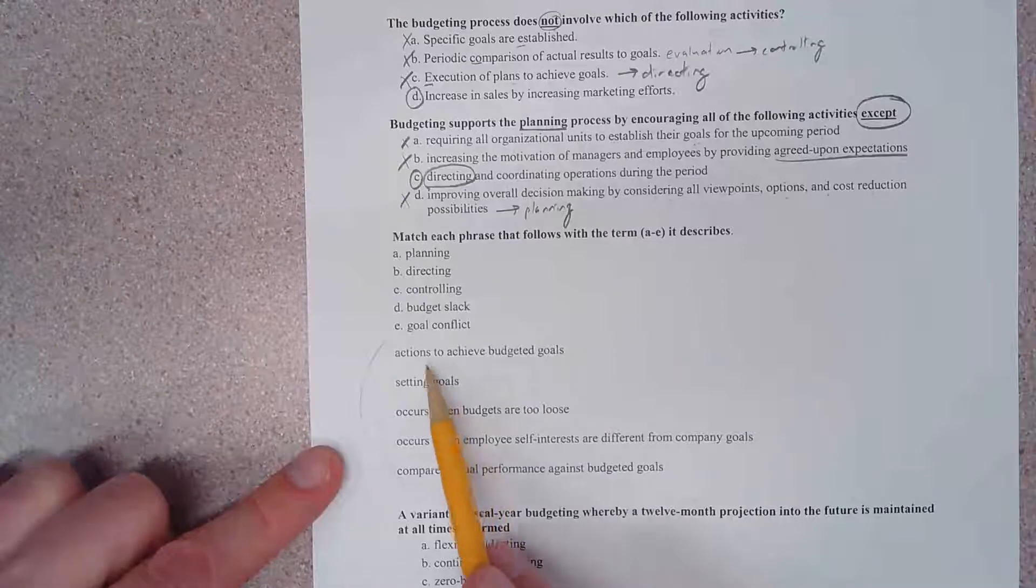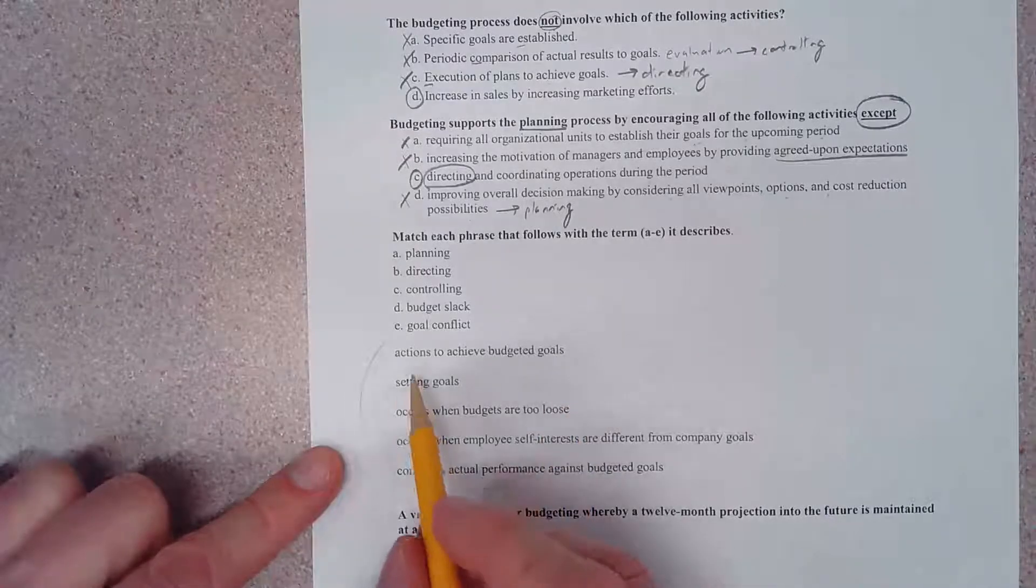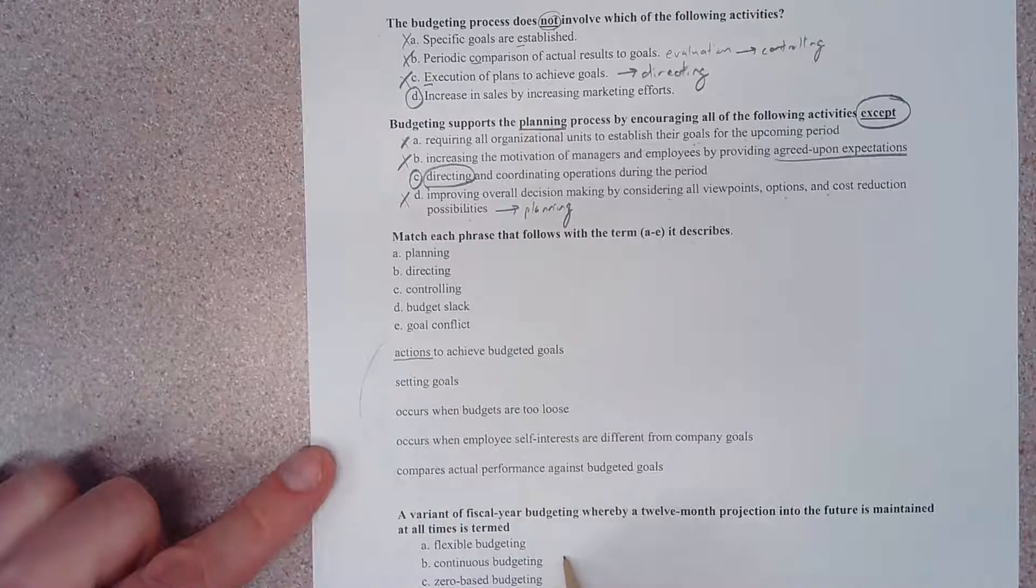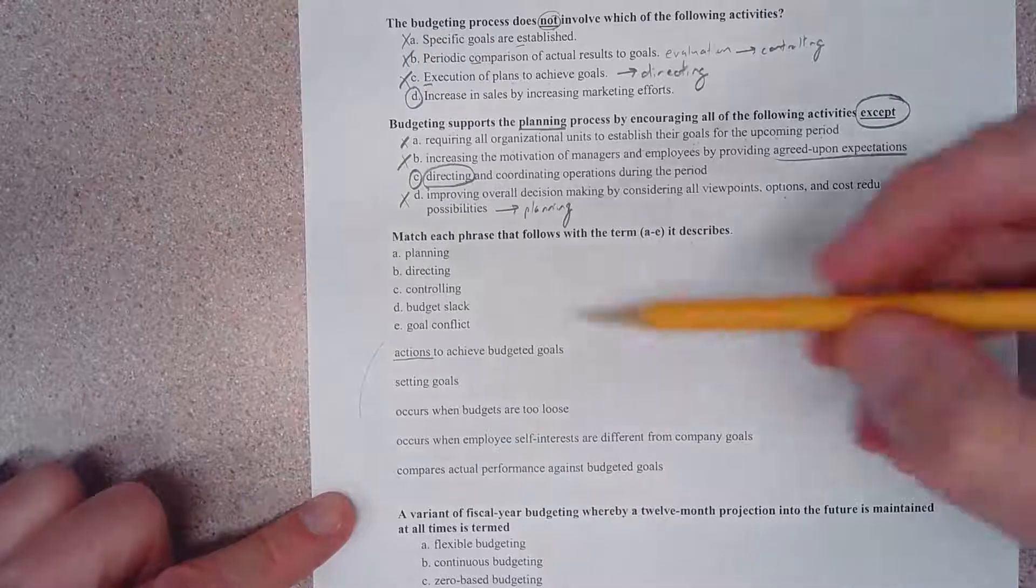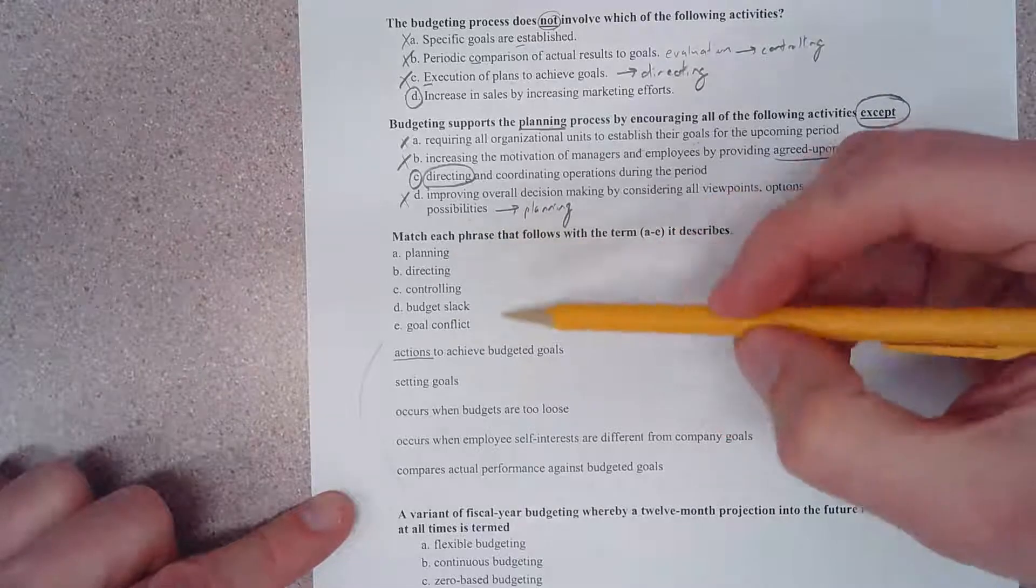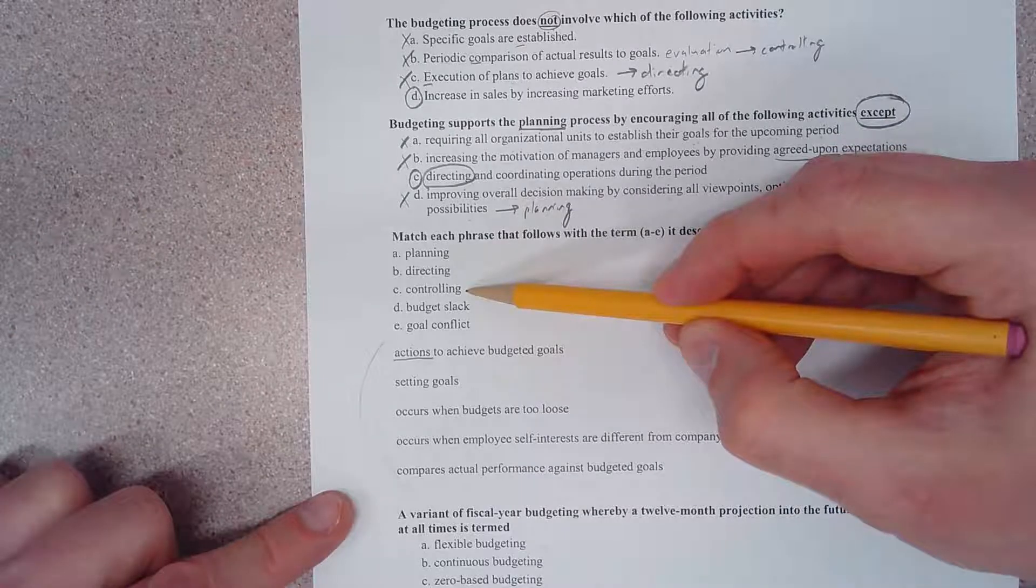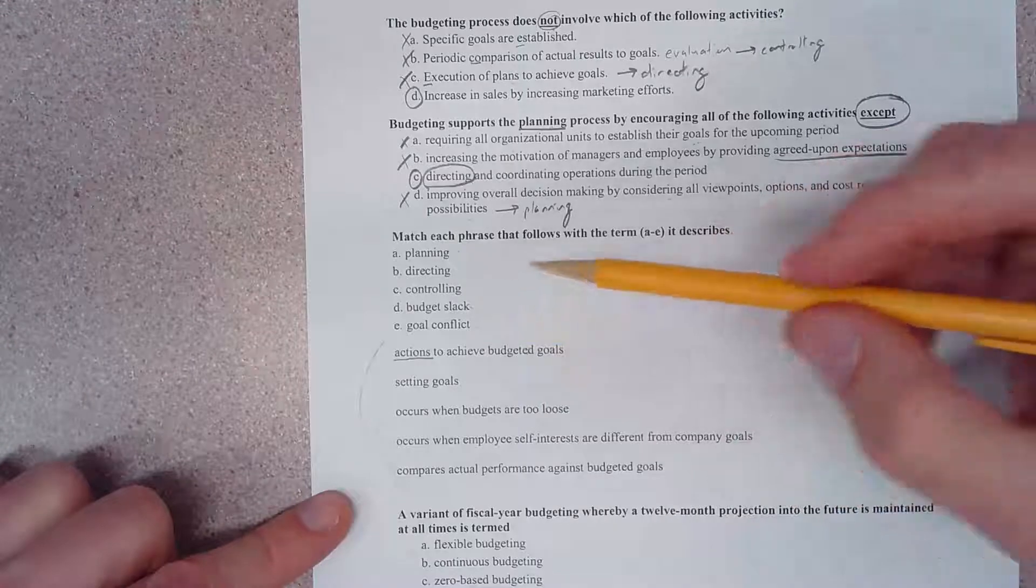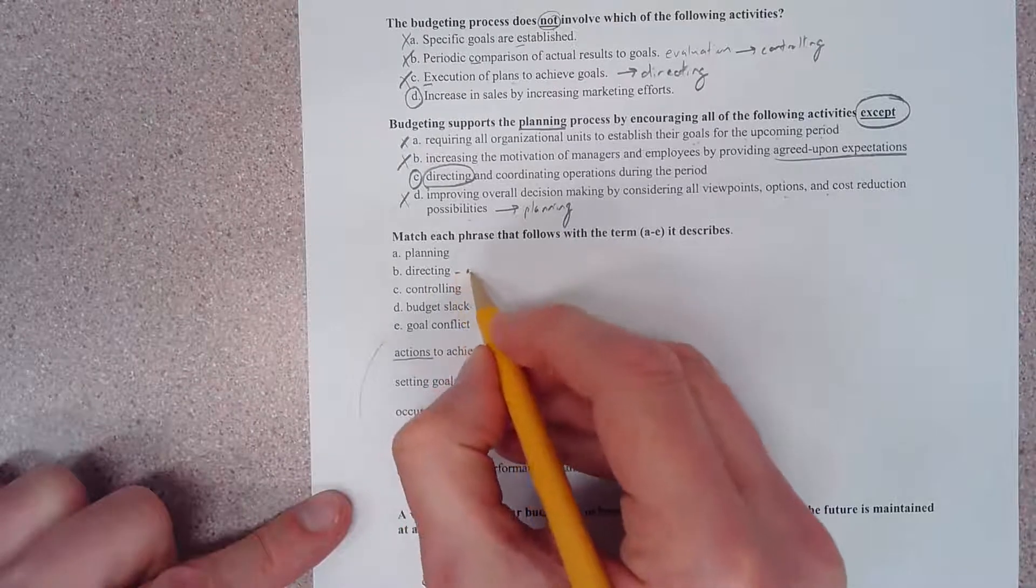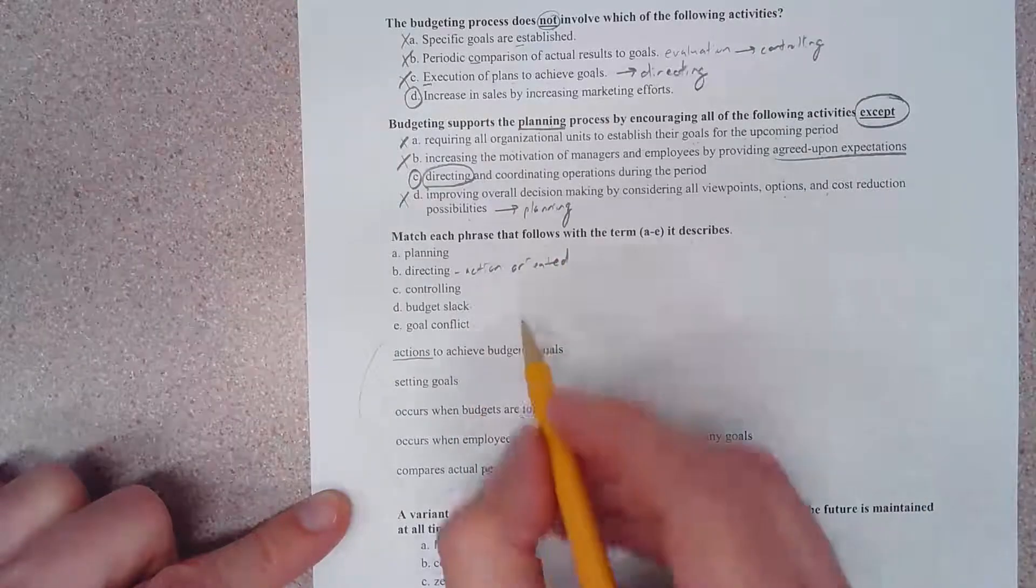So it says actions to achieve budgeted goals. I want you to focus on this word right here - actions. And then I want you to think about it. Well, it's not going to be A because this part comes after A. Controlling is an evaluation process, and then these other two don't make a lot of sense. Our answer choice here that is correct is directing. Directing is action-oriented, by the way.